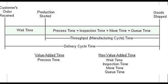Next, we will discuss the different kinds of time in inventory management. There are five types: wait time, process time, inspection time, move time, and queue time. Wait time is the time from when you receive an order from your customers until the time you start production. Process time is the time to convert your raw materials into finished goods.